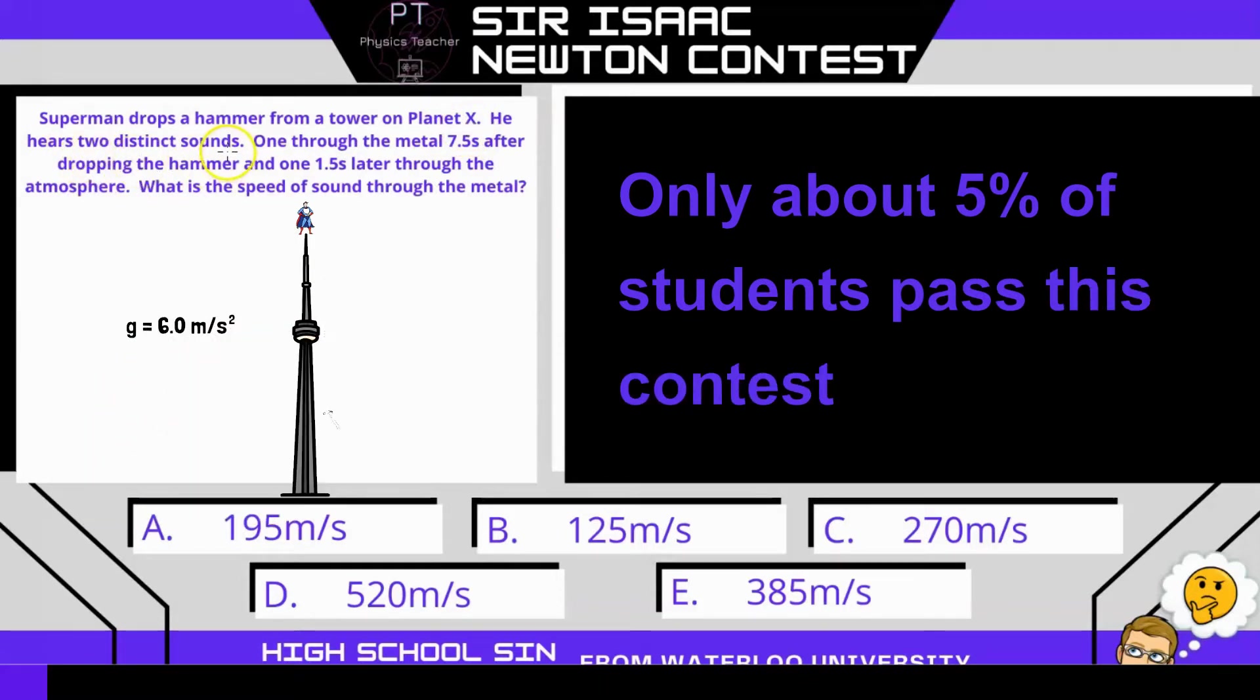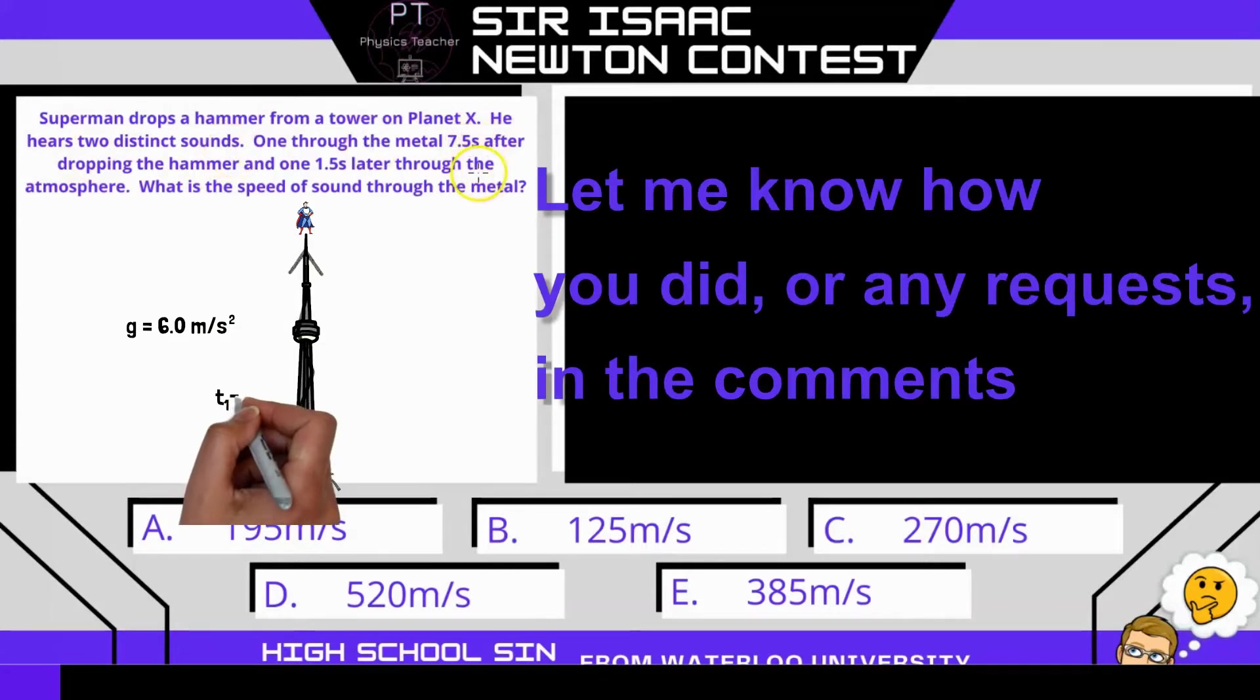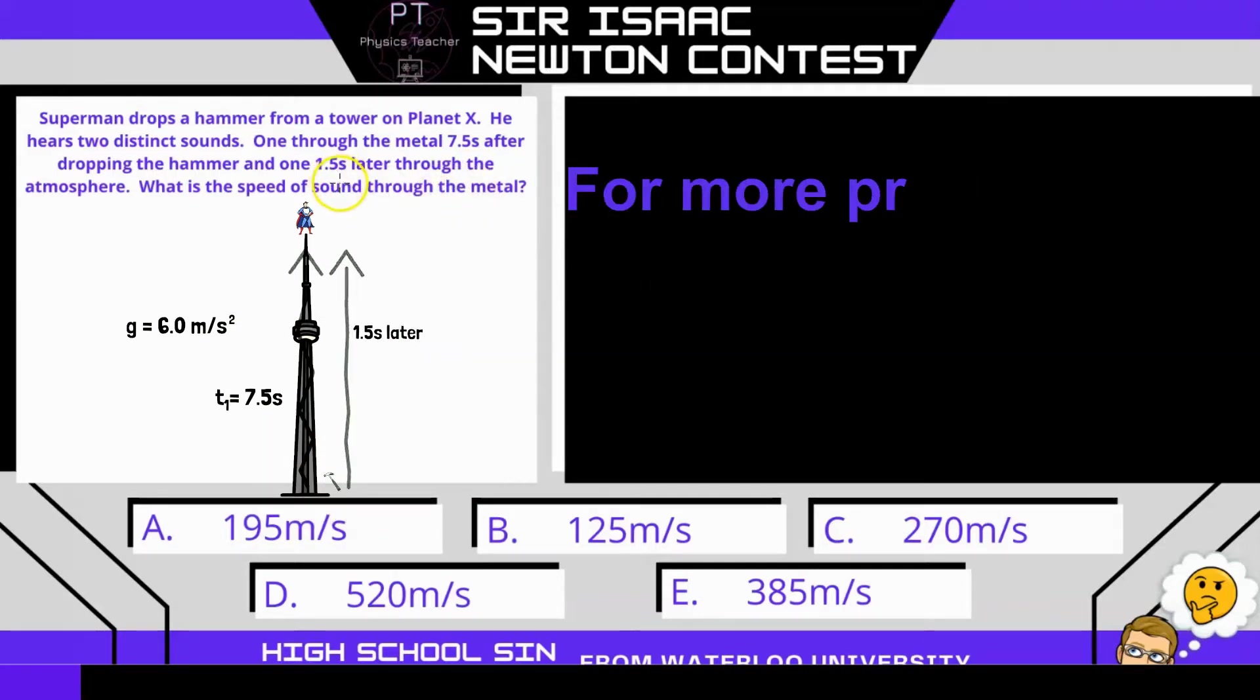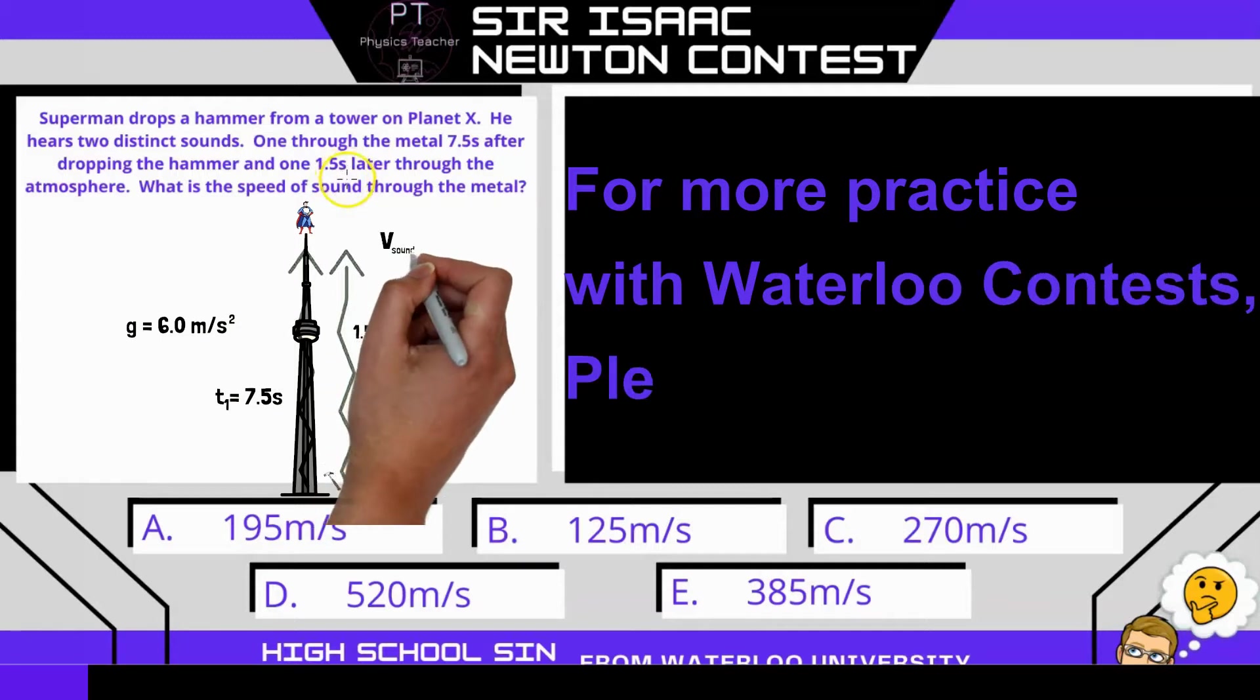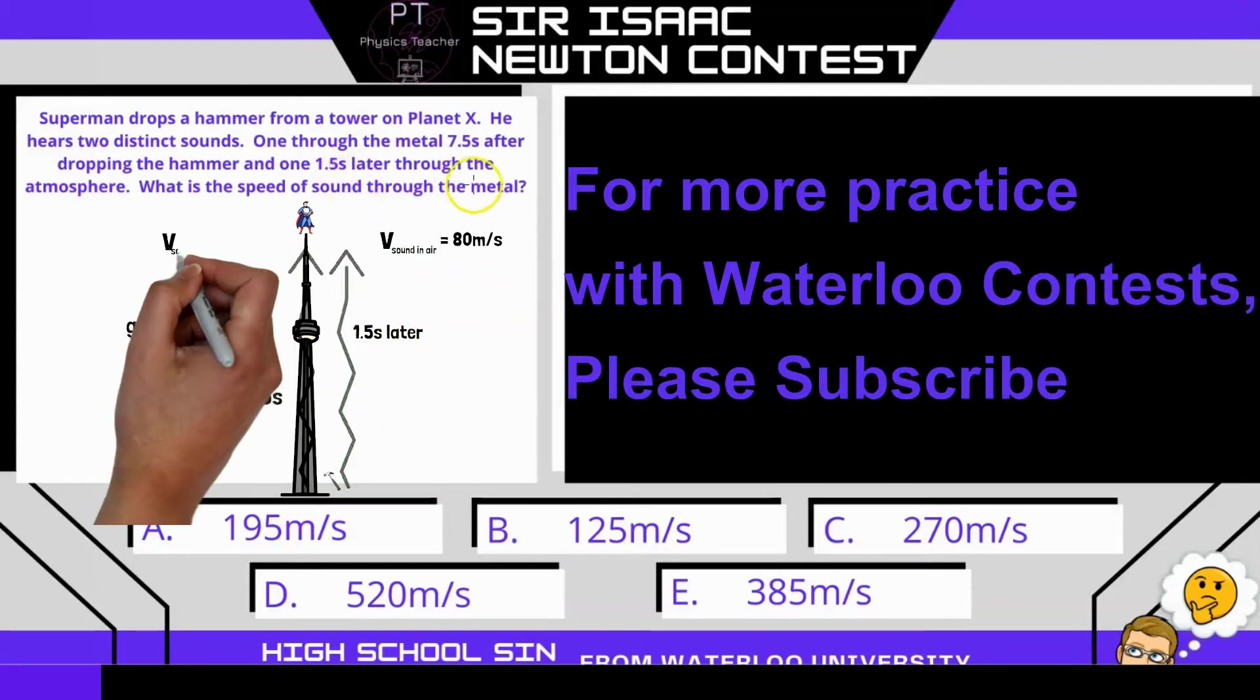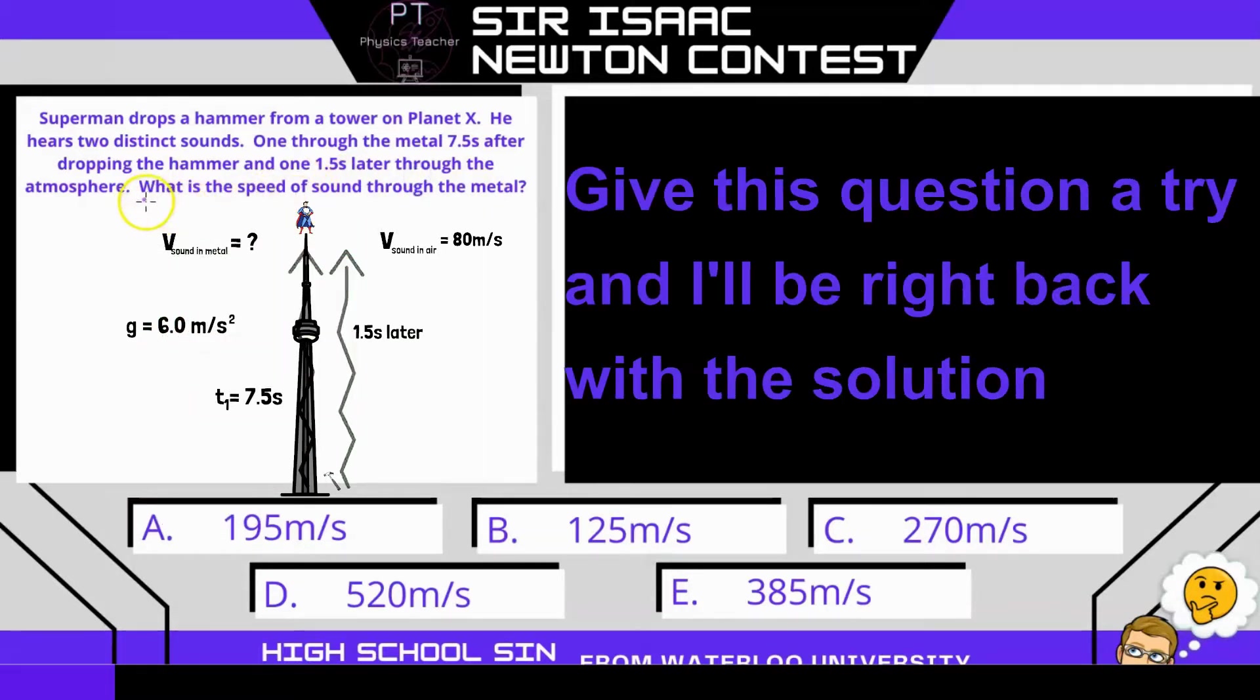He hears two distinct sounds. One is through the metal, seven and a half seconds after dropping the hammer, and one is through the atmosphere, 1.5 seconds after hearing the first sound. Now we know that the speed of sound through the atmosphere is 80 meters per second. The question asks, what is the speed of sound through the metal?